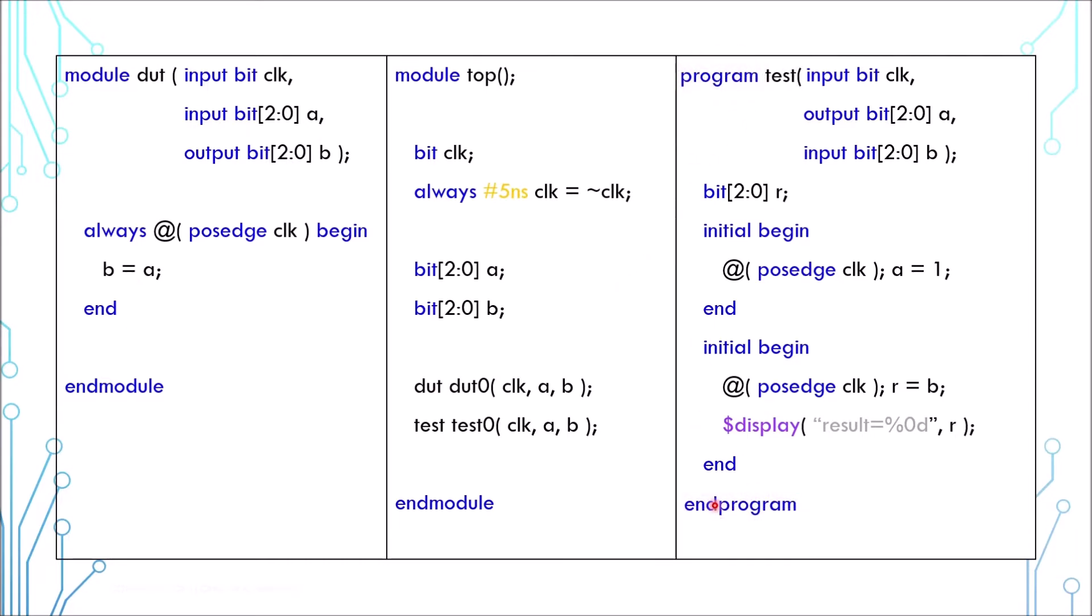Now first things first. Program. You can use a program to write test. It is very similar to a module. However, a program is not synthesizable. You can use initial block in a program, but you cannot use always block. If you want, you can use forever syntax as a replacement. Program is used to differentiate a test from a design module. Of course, you can still use a module, but it has some problems.